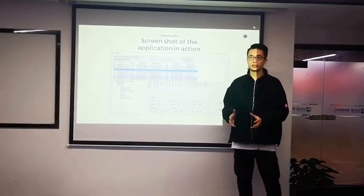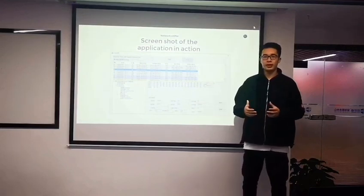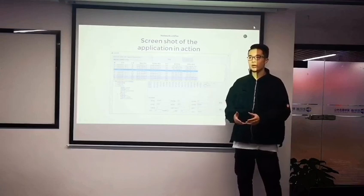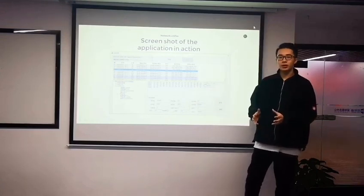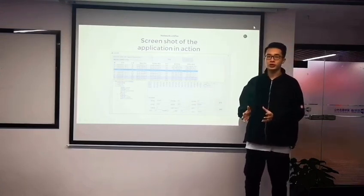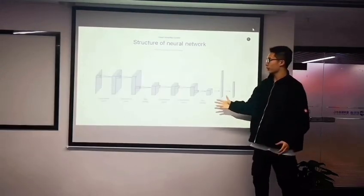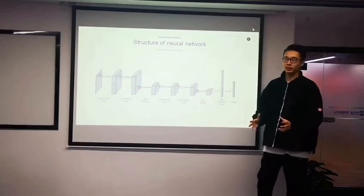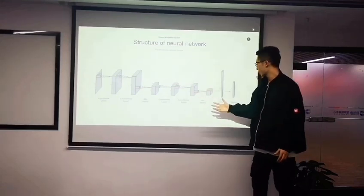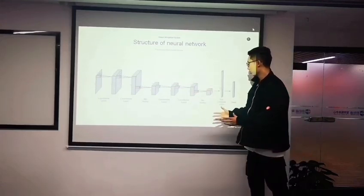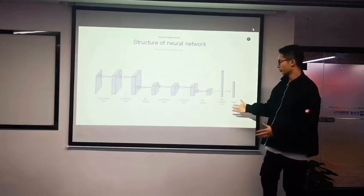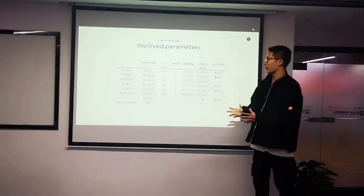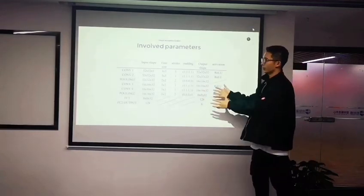The most significant event that draws me deeper into computer science happened during my practice at the Chinese Academy of Sciences. I developed an image recognition system based on deep learning. The structure of the neural network is comprised of four convolution layers, two pooling layers, and two fully connected layers. The involved parameters are shown in this table.